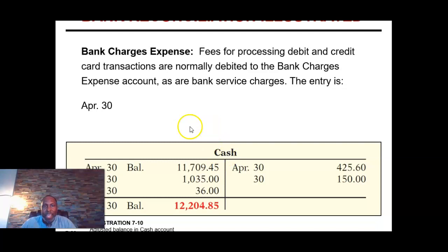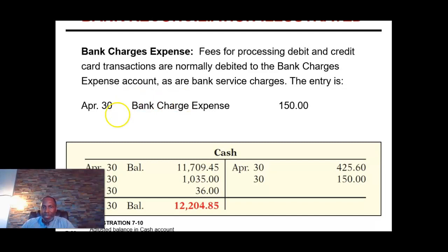For the fees charged by the bank — credit card, debit card, bank service charges — we'll often lump those together as bank total expense or sometimes call it miscellaneous expense. Debit the appropriate expense account and credit the cash account for $1.50. Once I've done those journal entries, I'll post them to my cash ledger account. Once posted, my cash account reflects its true cash balance at the end of the accounting period.